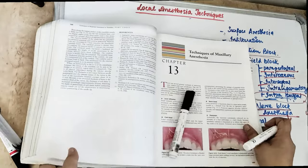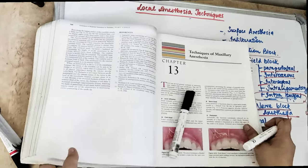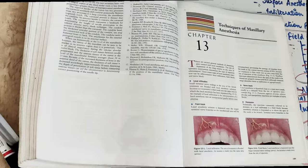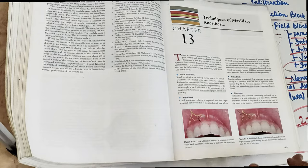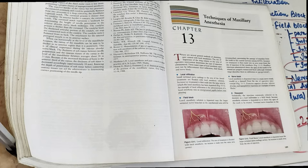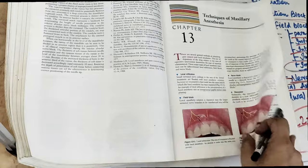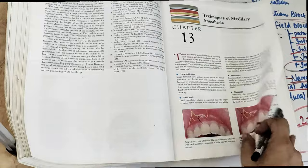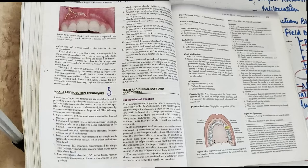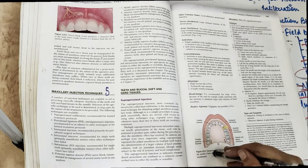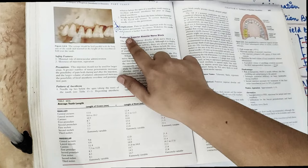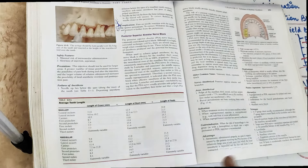Now coming to the nerve blocks. The local infiltration is infiltrated into the vestibular area — we require a large amount of anesthesia delivered into the vestibular area at the terminal branches. Starting from the PSA nerve block: the PSA nerve block anesthetizes the mandibular branch of the posterior superior alveolar nerve.